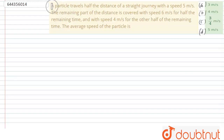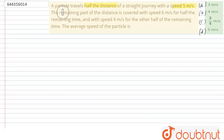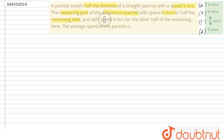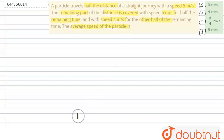Hello, the question is: a particle travels half the distance of a straight journey with 5 meter per second. The remaining part of the distance is covered with a speed of 6 meter per second for the first half time, and with a speed of 4 meter per second for the second half time. The average speed is to be calculated.